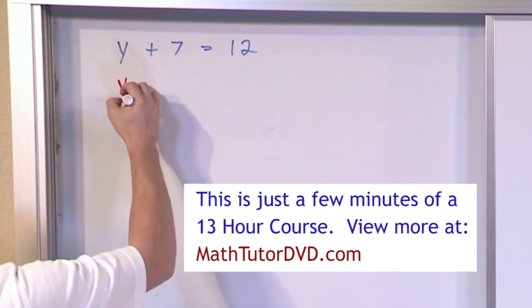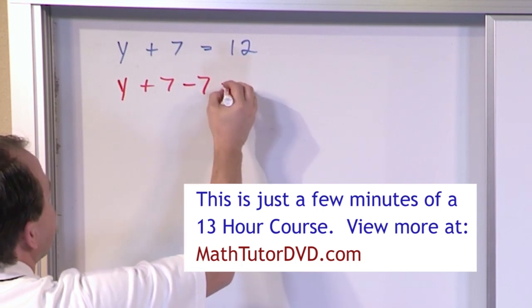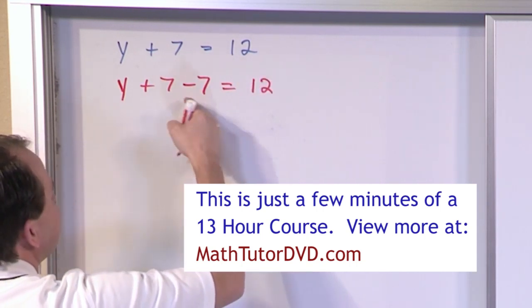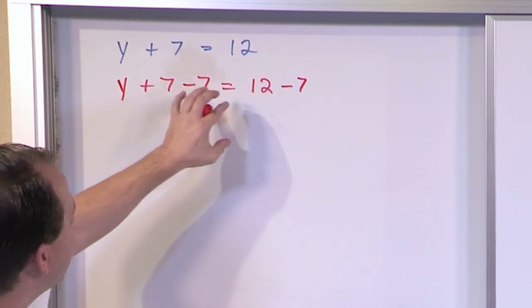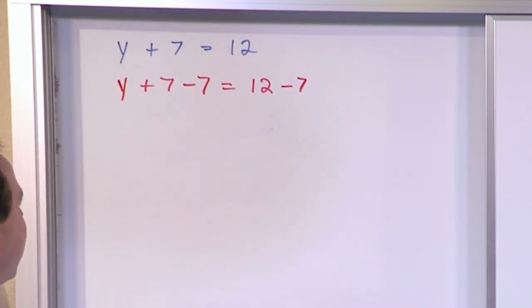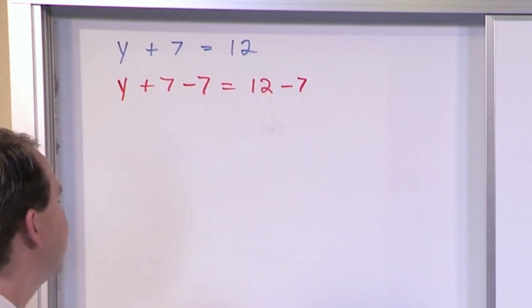The way we do it is by doing the opposite. We're going to subtract 7 from the left, and because we do it to the left, we must also do it to the right. If we didn't do it to the right and we only did it to the left, then we've screwed up and we haven't done anything valid. But as long as we subtract 7 here, we can subtract 7 over here.